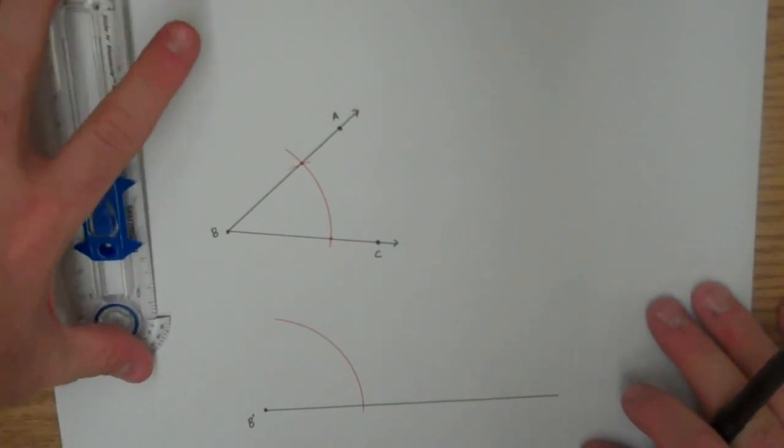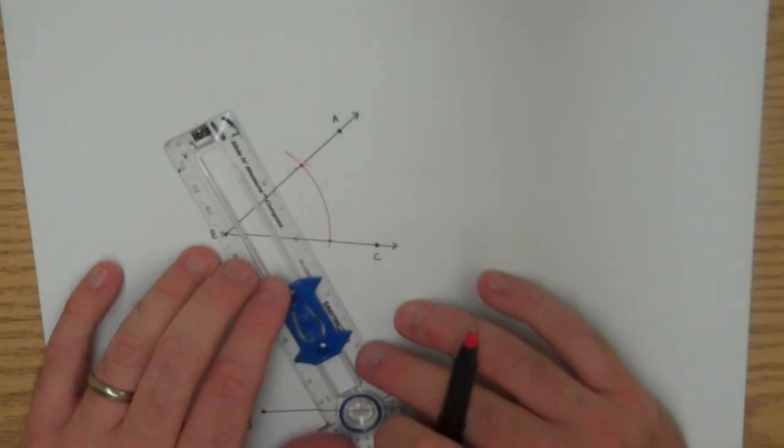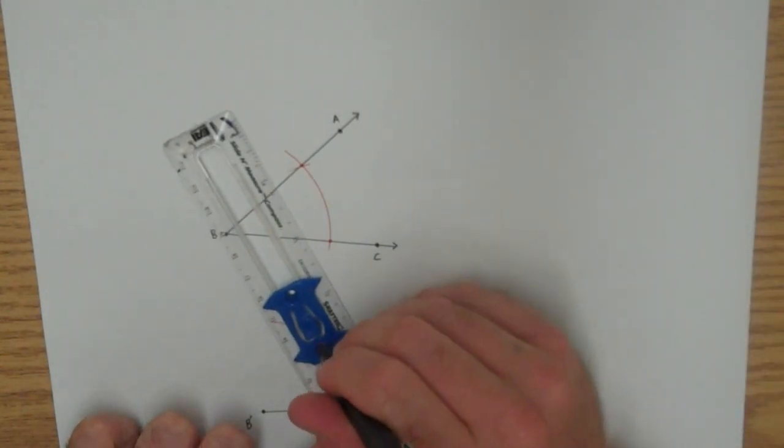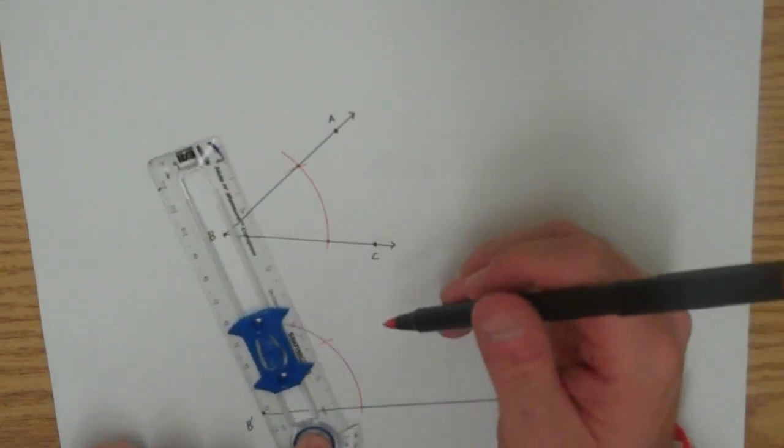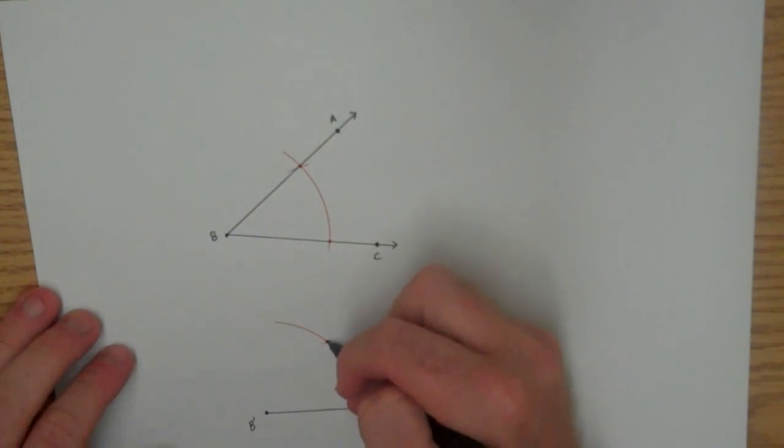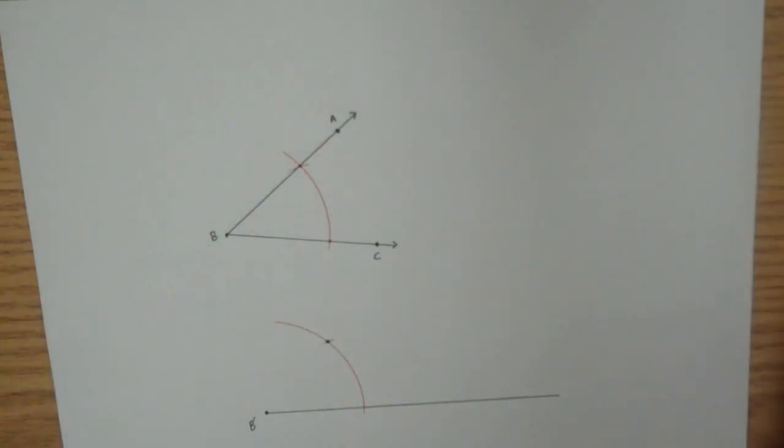Now I'm going to create the same, I'm going to mirror that right down here. Put the point of my compass on the known intersection, and then draw this arc. This intersection point right here will make the other ray of my angle.